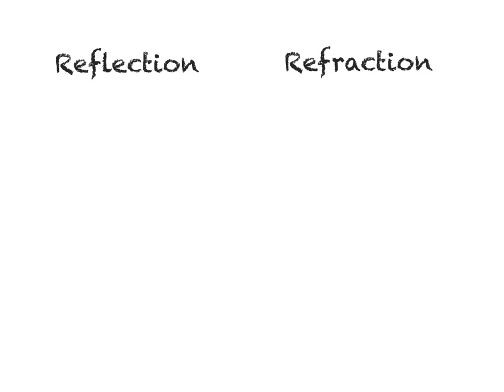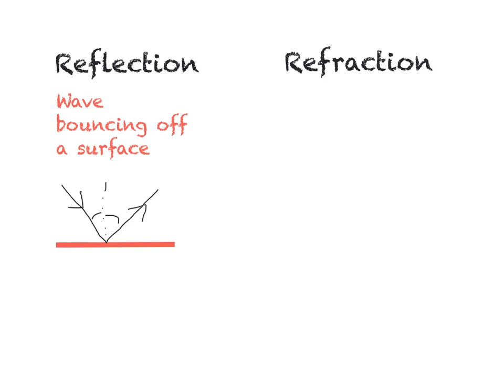From your previous studies you should be aware that reflection refers to a wave bouncing off of a surface — the boundary between two mediums — causing the wave to bounce back into the medium it was travelling through. For a plane mirror, the angle of incidence I will equal the angle of reflection R. The angle of incidence is the angle between the incoming incident ray and the normal, and the angle of reflection is the angle between the normal and the reflected ray.